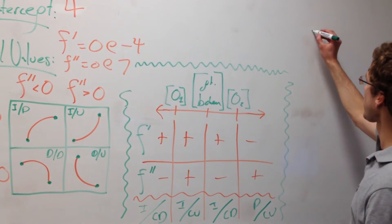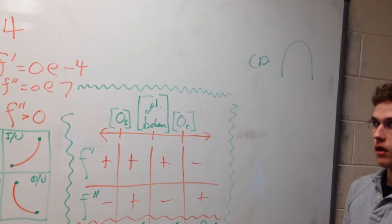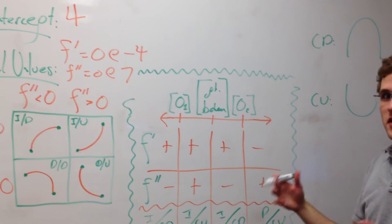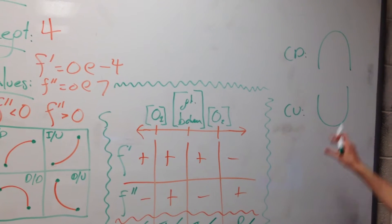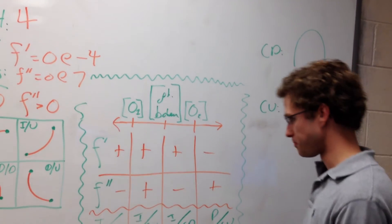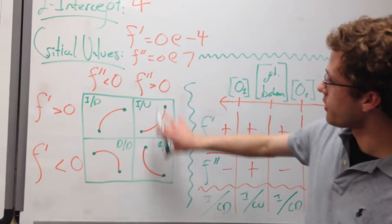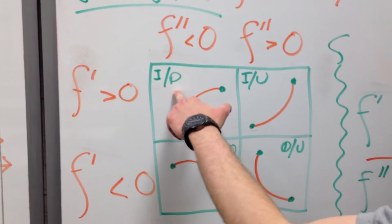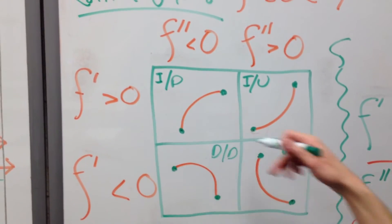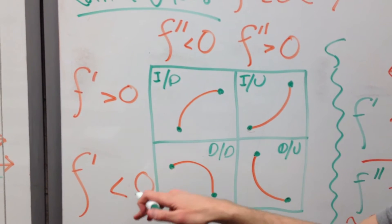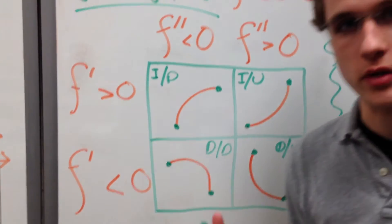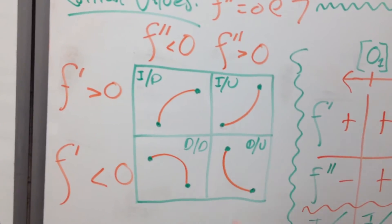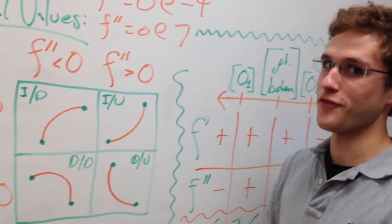Concave down looks like an arch — opening downward. Concave up looks like a cup — opening upward. Here's a handy chart: if f double prime > 0 and f prime > 0, increasing and concave up; if f prime < 0 and f double prime < 0, decreasing and concave down; if f double prime > 0 and f prime < 0, decreasing but concave up. This chart will save you a lot of work.